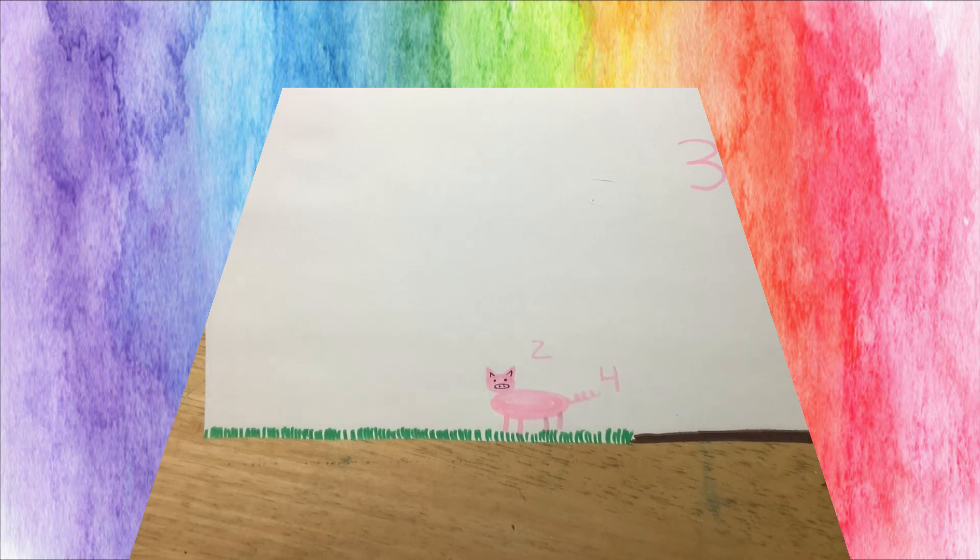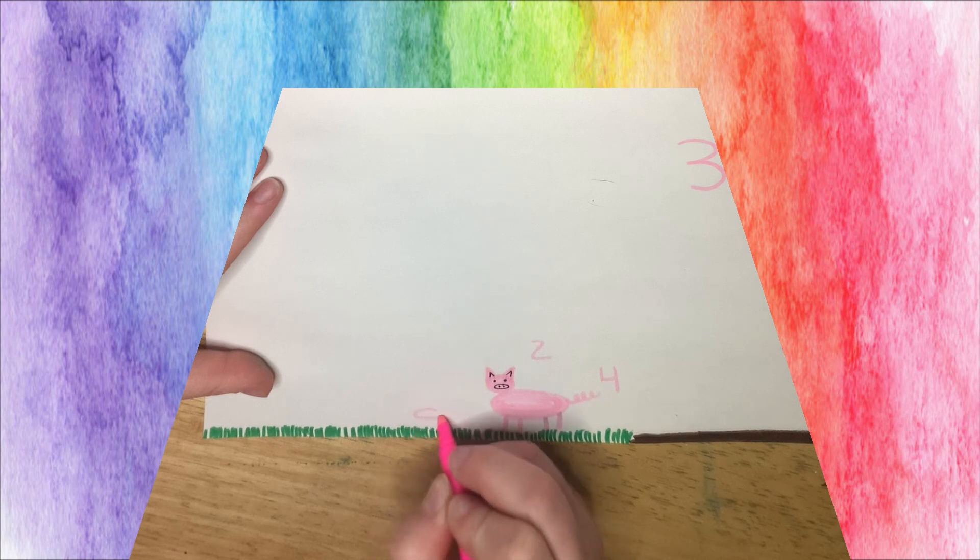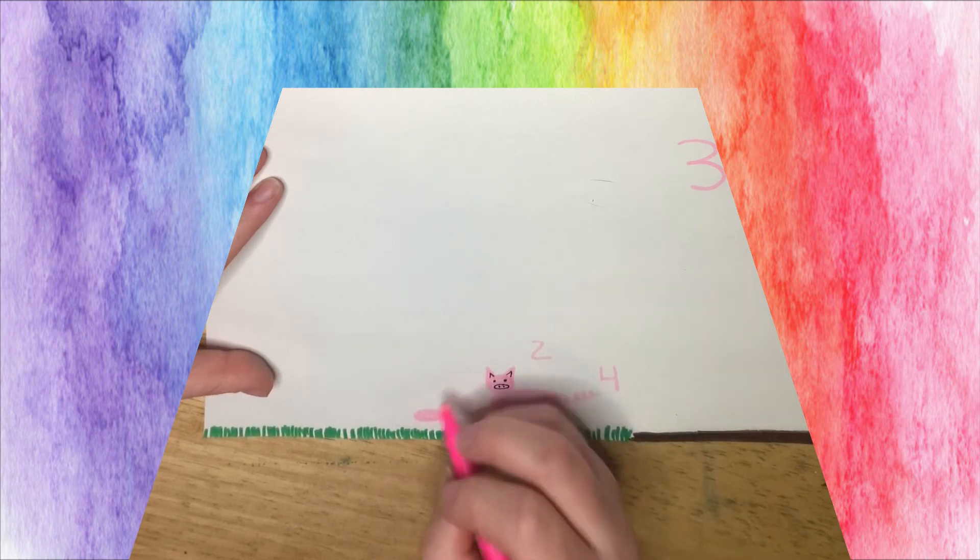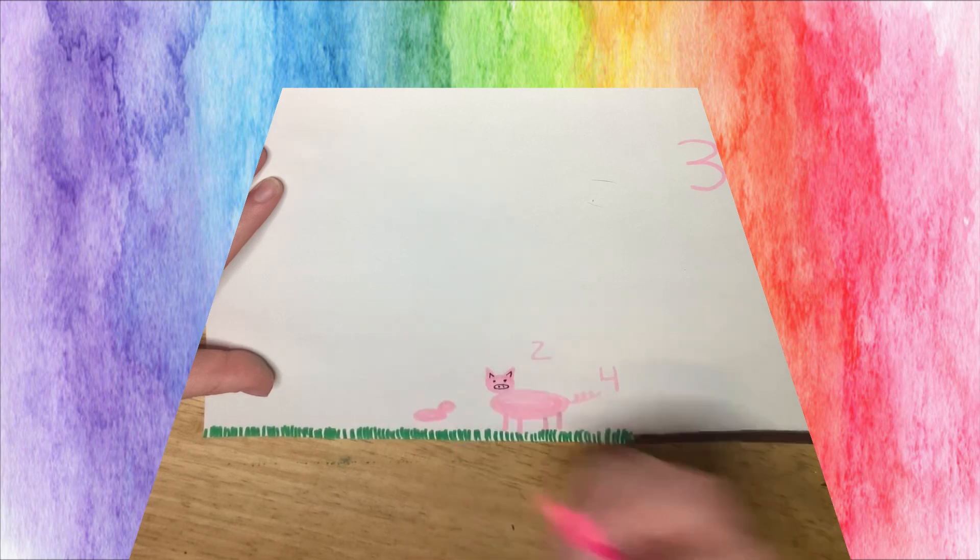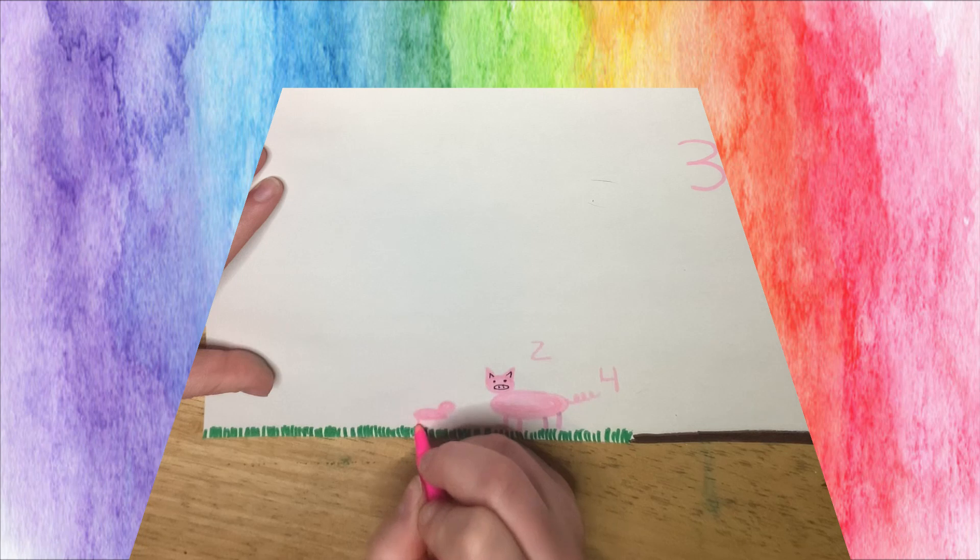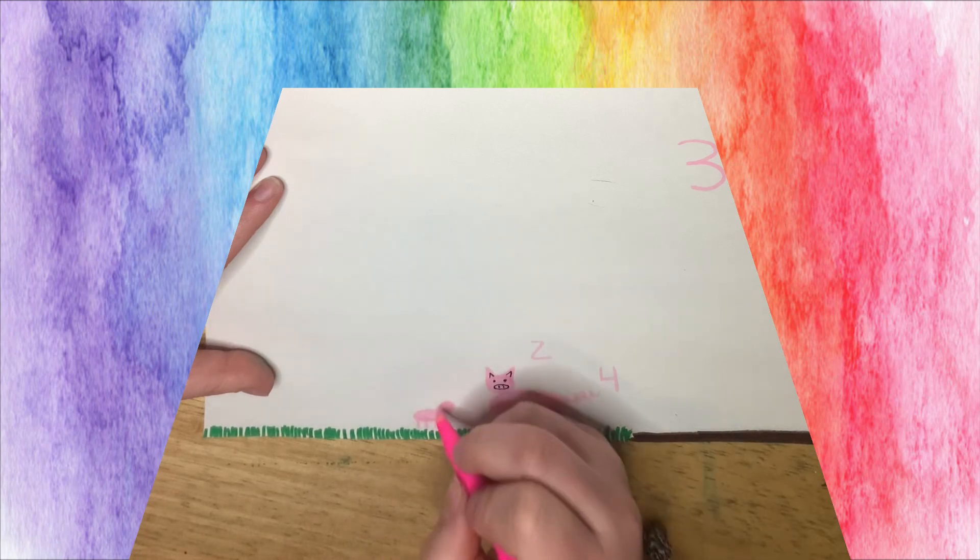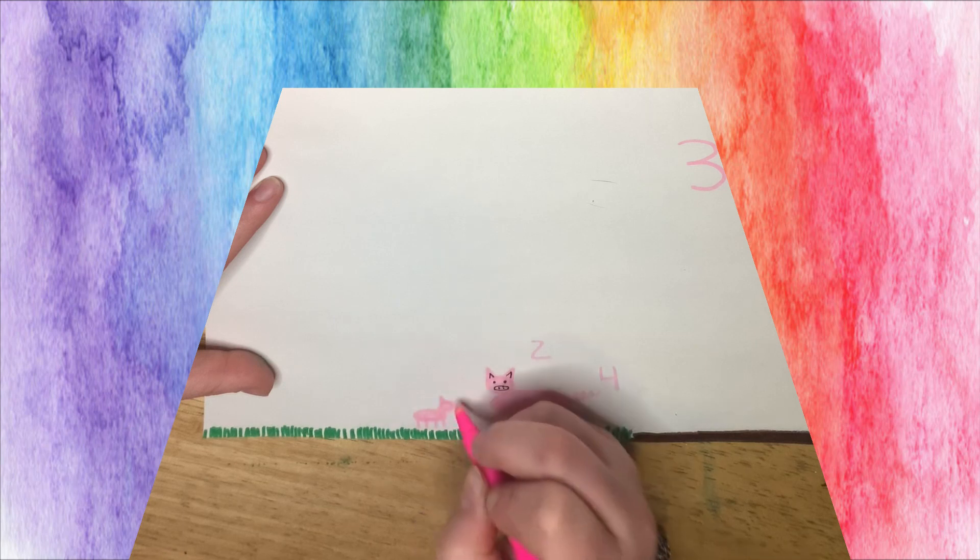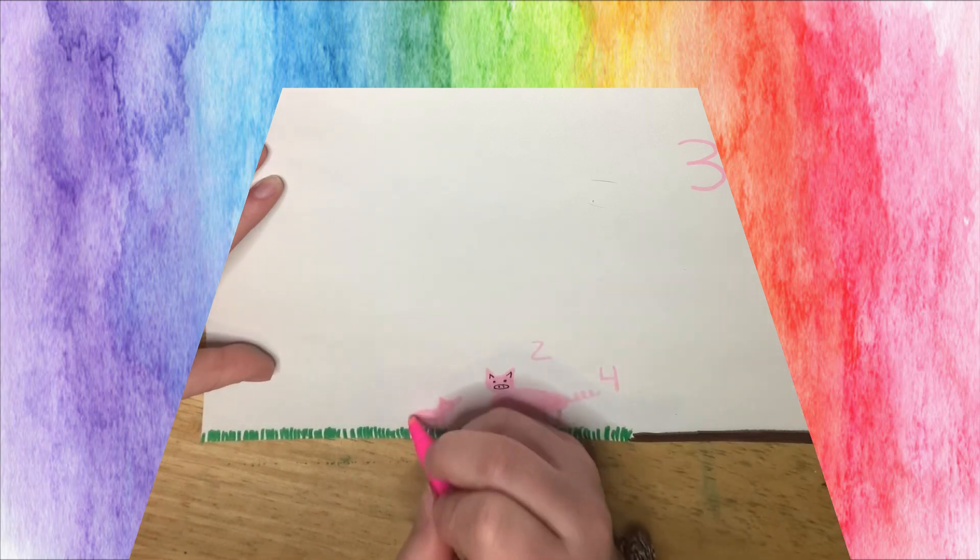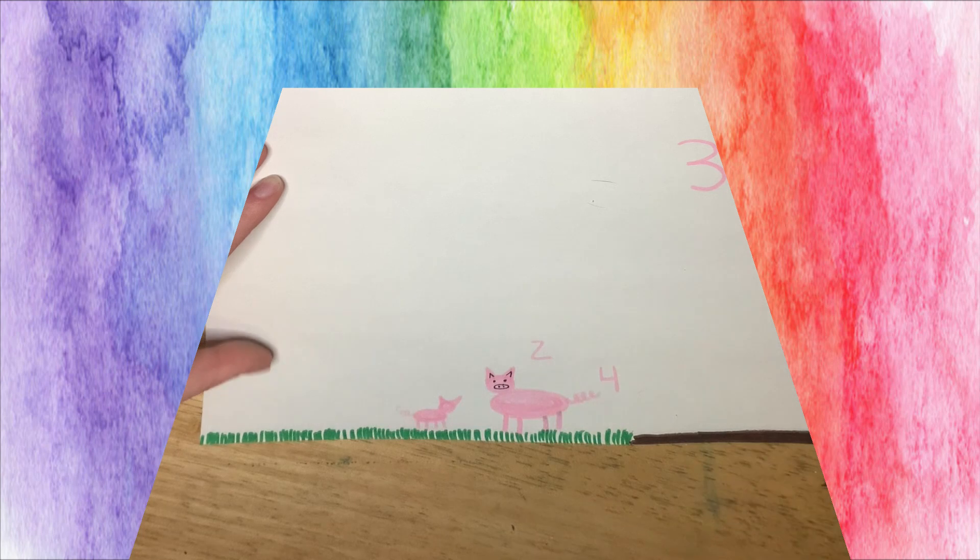And now it's time for our second pig. I'm going to make this one a little baby pig. I'm going to do a little oval. A little circle head. Remember we need four legs. One, two, three, four. Two triangle ears.